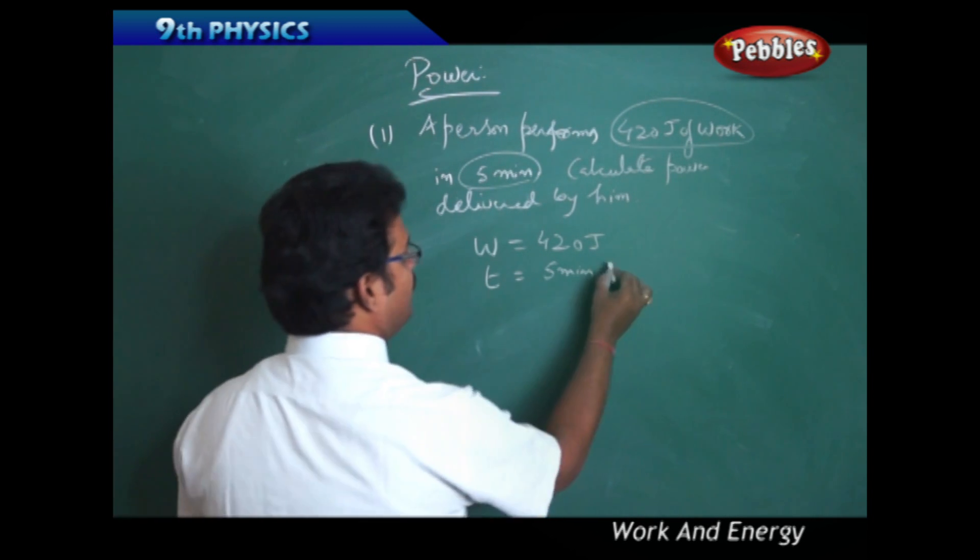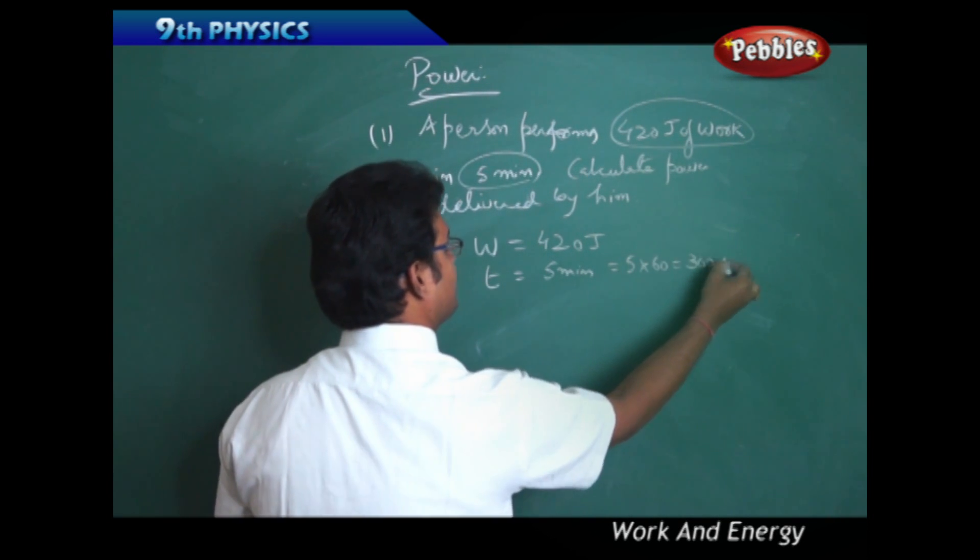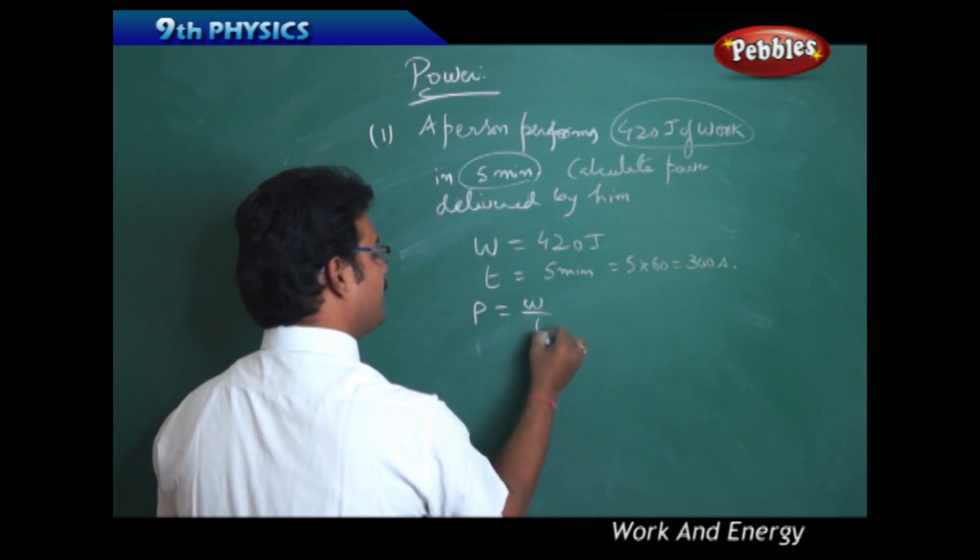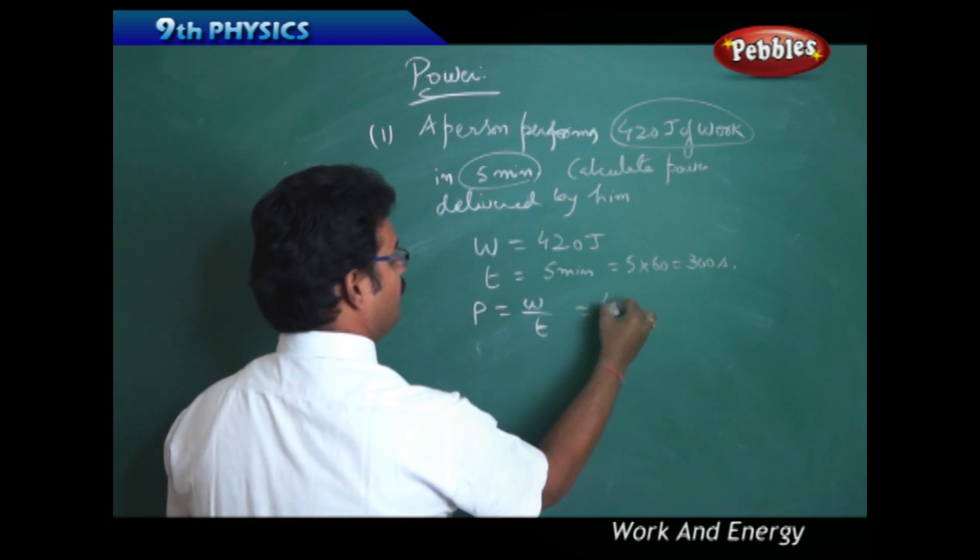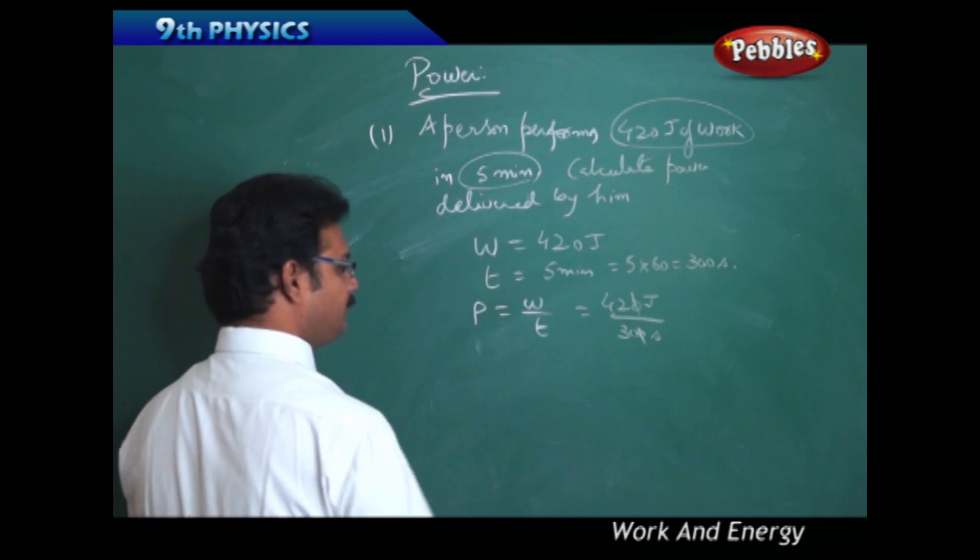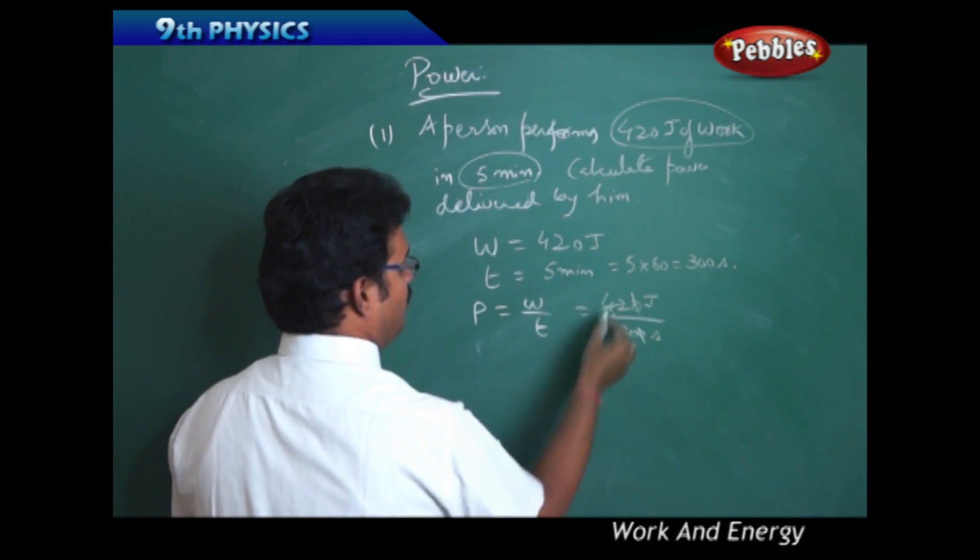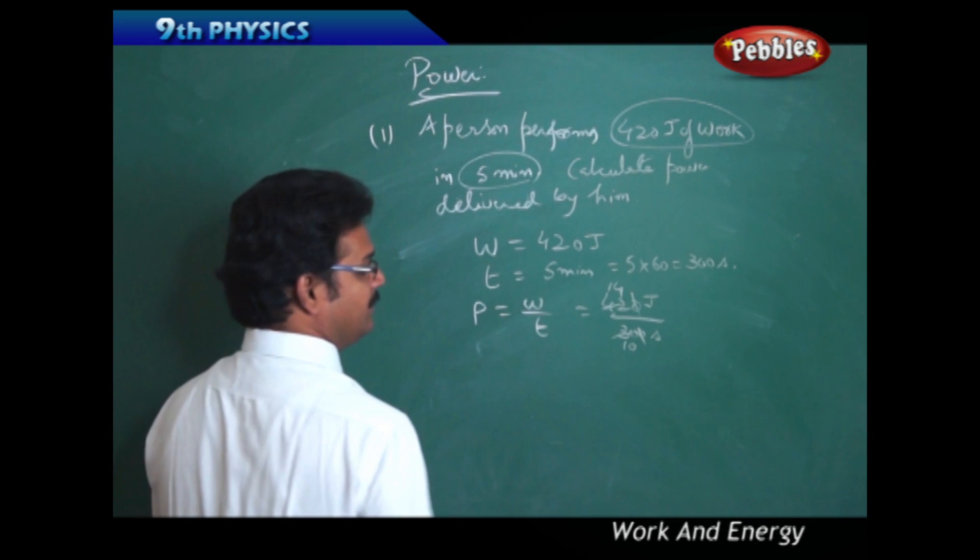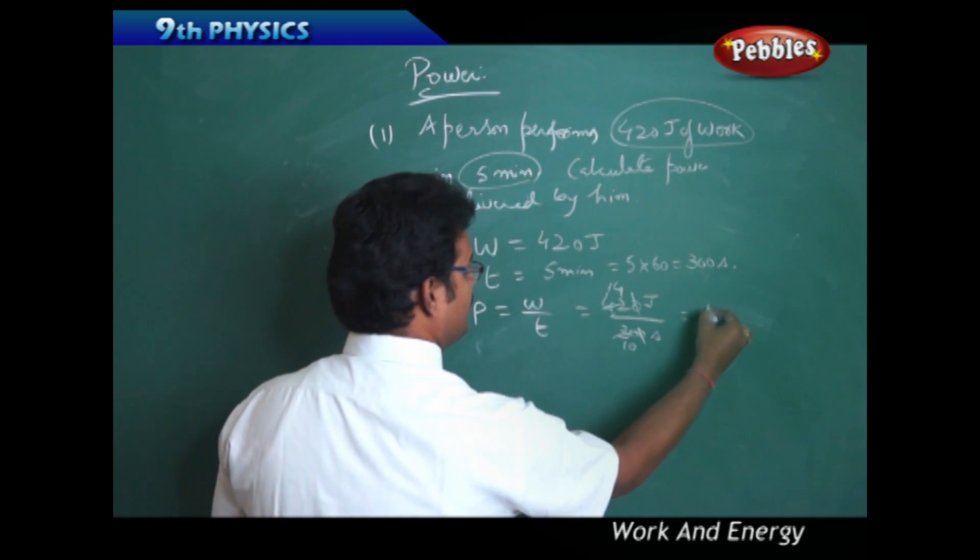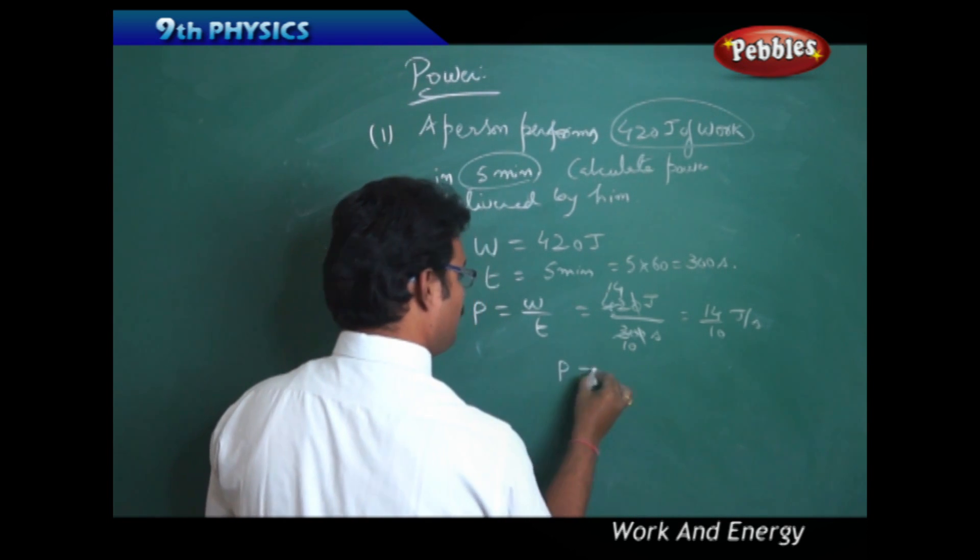W is 420 joules, time is 300 seconds. 420/300 = 14/10 = 1.4 joules per second. The answer is power P = 1.4 watts.